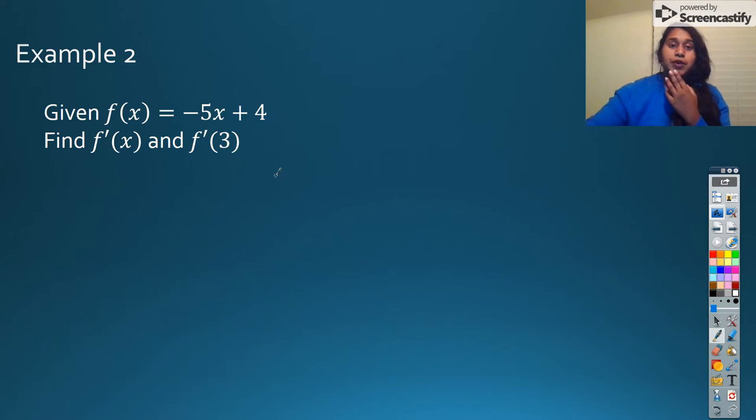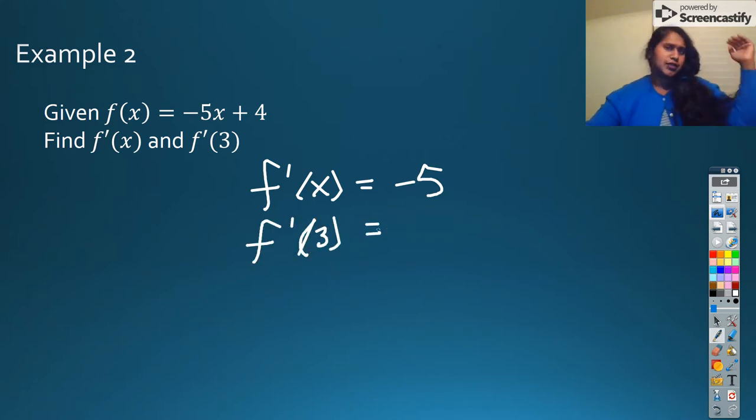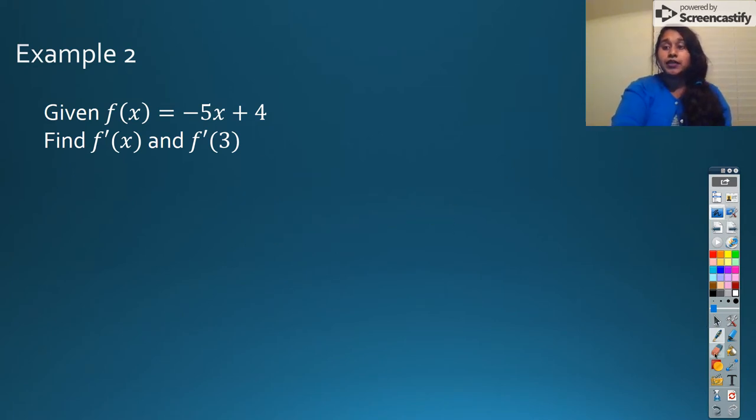So that actually means my limit as h approaches 0 is simply the constant negative 5. So if we wanted to wrap up, we could say f prime of x is equal to negative 5. And when we plug in f prime of 3, well, there's no variable to plug in. It's a constant line at negative 5, so all answers must be negative 5.